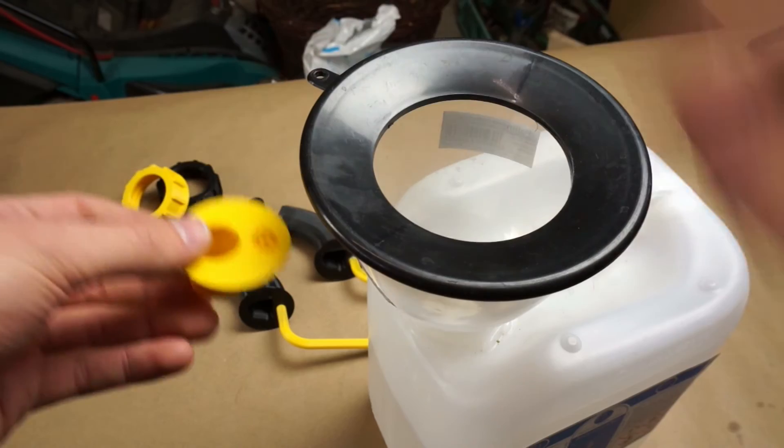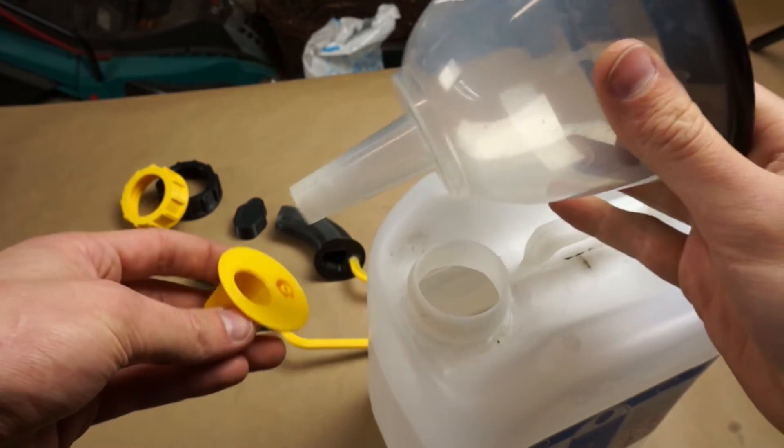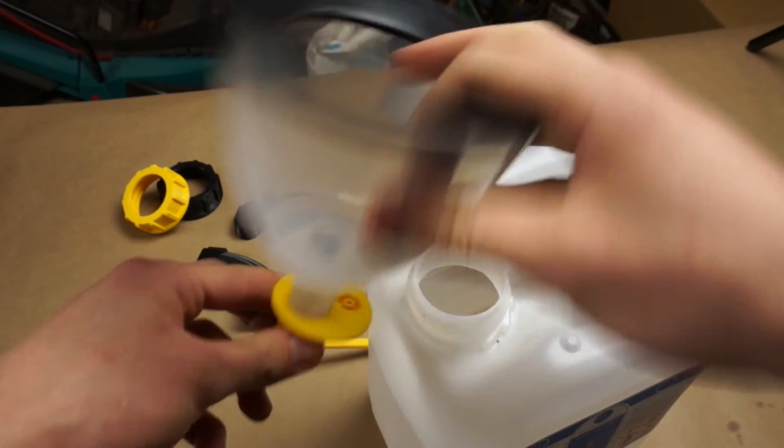It sits on the canister just like the spout, gets screwed down and then the funnel can fit in this hole held in there securely.